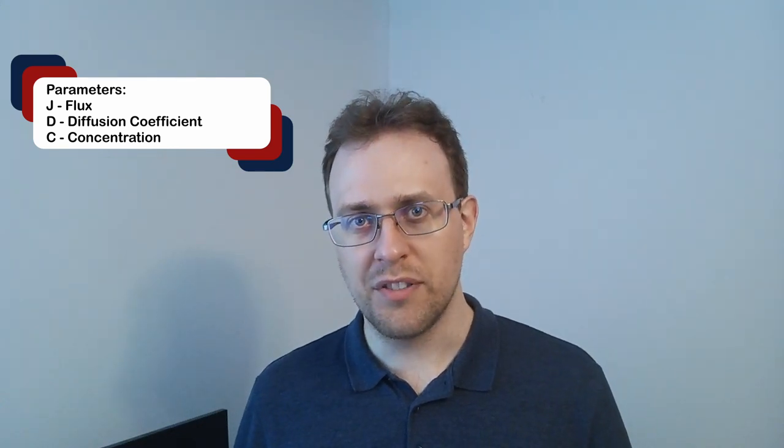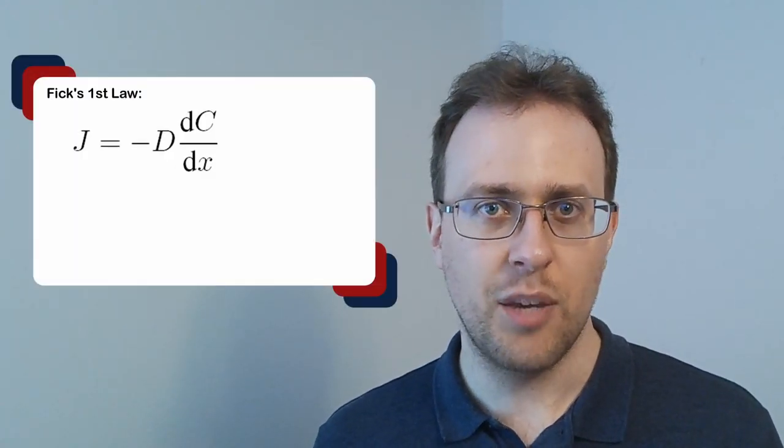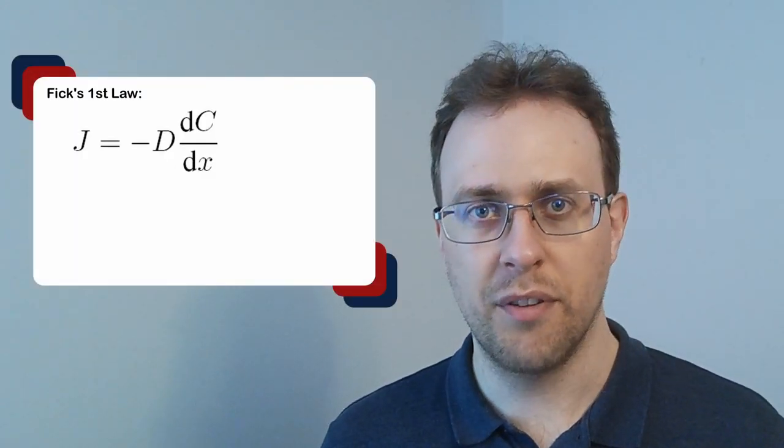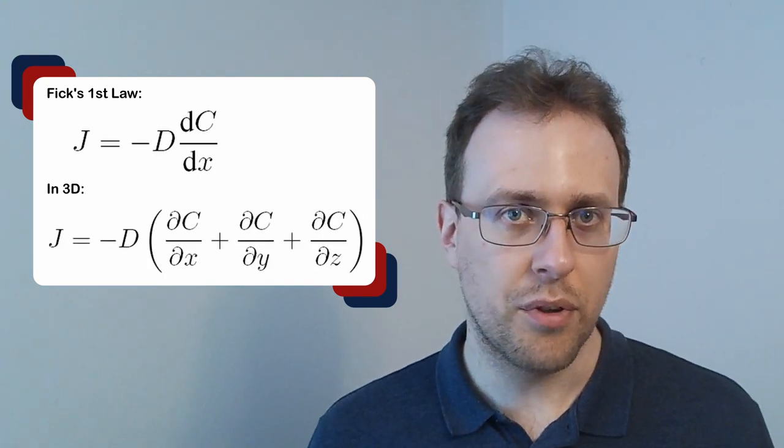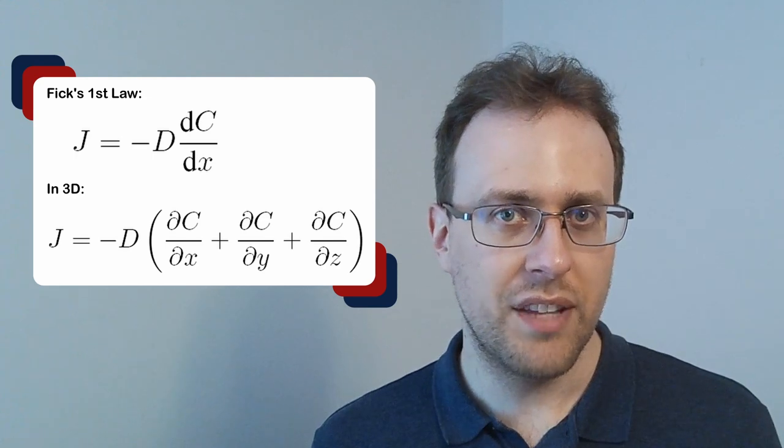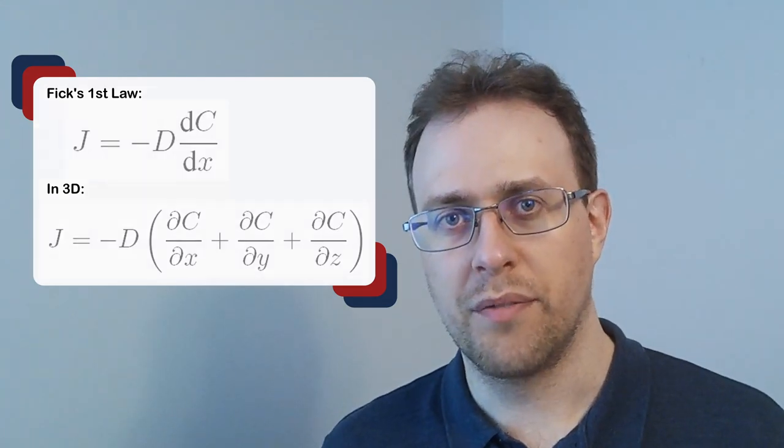Mathematically, we usually write the flux as variable J, the diffusion coefficient as parameter D, and the concentration as parameter C. Over one dimension, say the x-direction, we get J equals negative D times the derivative of C with respect to X, and we can extend this to two or three dimensions by including Y and Z and switching to partial derivatives.